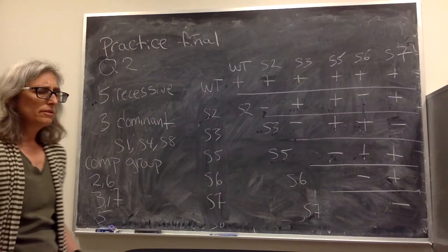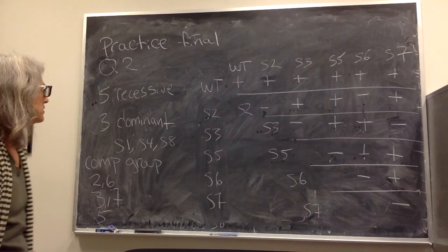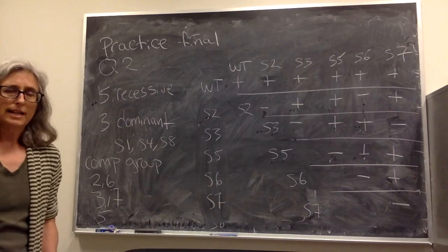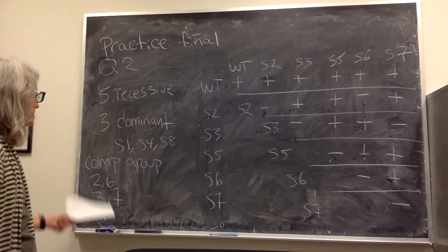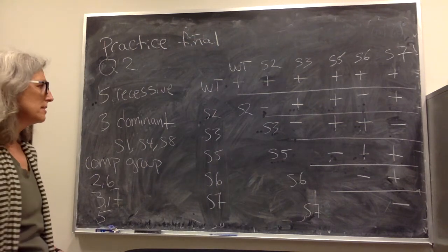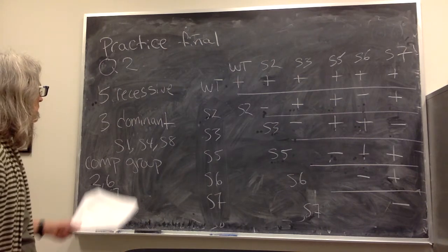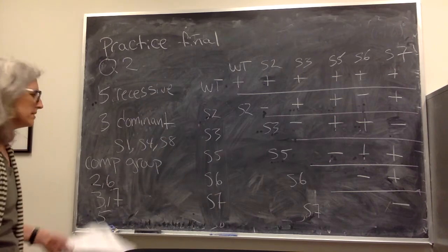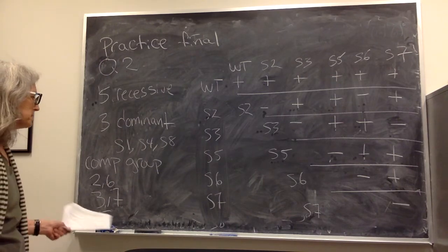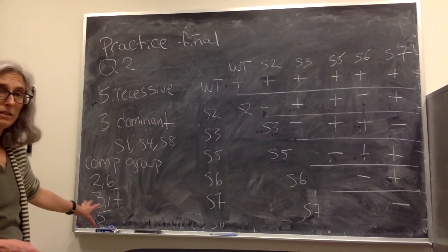So the question wants to know amongst all of our mutations how many complementation groups could we have. So it's possible we don't know these mutations in S1, S4, and S8. They can be mutations in any one of these genes but we wouldn't know because they gave this dominant phenotype and we couldn't use them in the complementation test. So they could all be alleles of any of these three genes and if that's the case then the minimum number of complementation groups or genes defined in this analysis would be three.